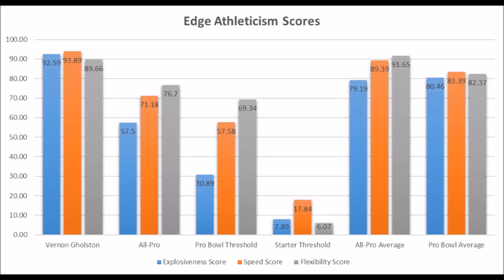The reason why Vernon Golston was likely a top 10 overall selection was because of his athleticism traits. He had a 92.59 explosive lower body strength score, a 93.89 speed score, and an 89.66 flexibility score. When you look at his testing he pretty much has all pro bowl potential from an overall athleticism standpoint, very near the all-pro and pro bowl averages. So when you see this, you might think analytics doesn't matter and that film is more important.